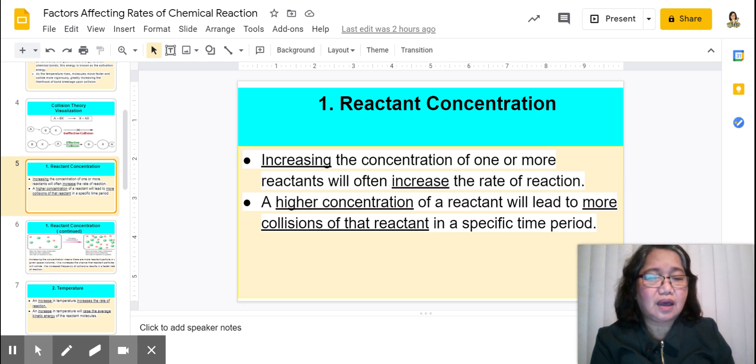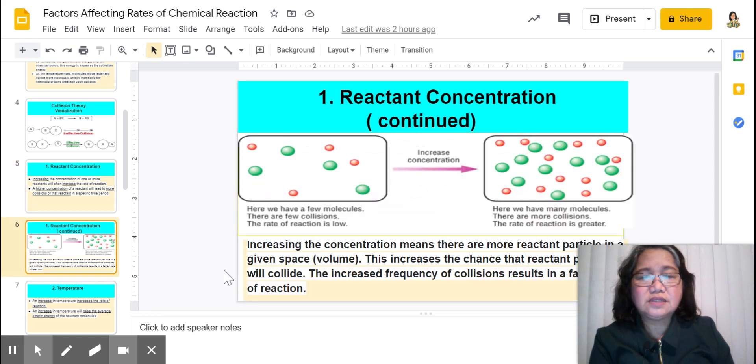Of the reactant in a specific time period, so therefore when this happens, the rate of reaction increases. Let's take a look at this one right here. We have a few molecules and a few collisions. Therefore, if you increase the concentration, there'll be more collisions and the rate of reaction will also increase. So as you can see, the volume remains the same but the number of particles are more, so therefore giving it the chance for more collisions so that the rate of reaction will be greater.